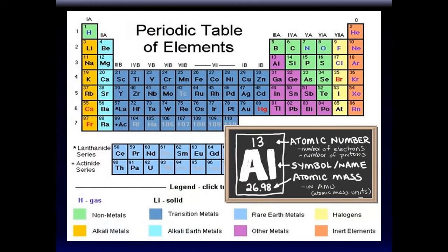This is the periodic table — a logical, methodical arrangement of all known atoms. There's a rationale behind it that is quite amazing. There are only about 110 different types of atoms available to us, and some are only produced in synthetic laboratory environments, so they don't exist in the real world. In the universe, there will be only 110 different types of atoms at most. If you go to other parts of the galaxy or different galaxies, you won't find atoms unknown to us.